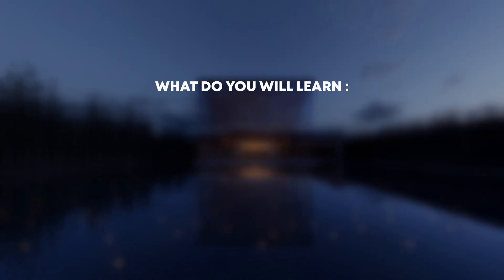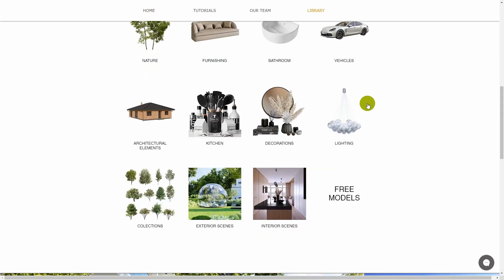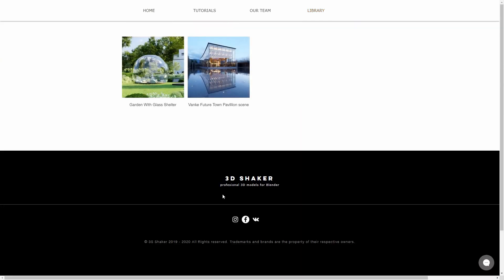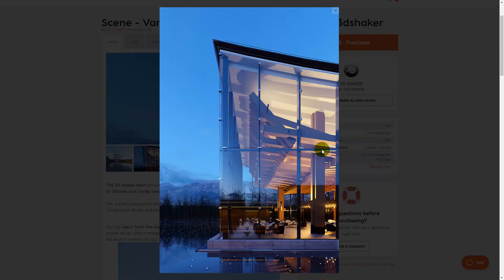This tutorial consists of 3 parts. The first part is all about setting everything up so light mix can work properly. In the second part, we will make a handy control panel for light groups, so adjusting illumination will be very easy and enjoyable. And finally, in the last part, I'll show you how to make a quick animation of changing lights in your scene with our light mix. As an example, I will utilize one of the projects I recently made and is available in our shop, so you can buy and play with it right now.